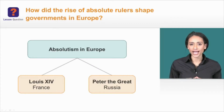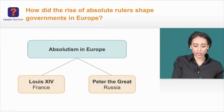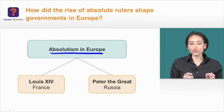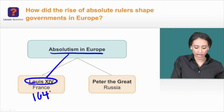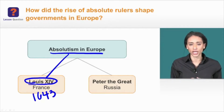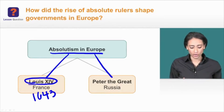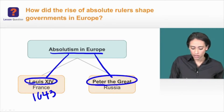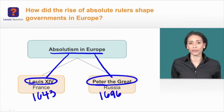In today's lesson, we're studying absolutism in Europe to answer the question: how did the rise of absolute rulers shape governments in Europe? We're looking at two case studies in particular: Louis XIV of France, who took office in 1643 at age five and ruled for a very long period, and Peter the Great of Russia, who takes the throne in 1696 — showing a very long period of absolute rule in Europe.